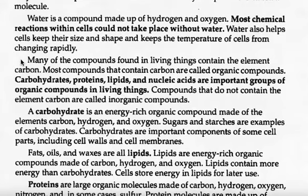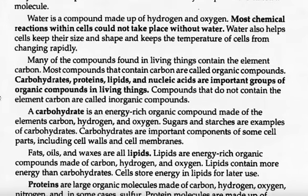Many of the compounds found in living things contain the element carbon. Most compounds that contain carbon are called organic compounds. Carbohydrates, proteins, lipids, and nucleic acids are important groups of organic compounds in living things. Compounds that do not contain the element carbon are called inorganic compounds.